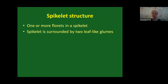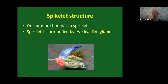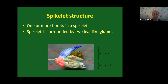To recap on spikelet structure: a spikelet contains one or more florets surrounded by two leaf-like glumes. In this diagram you can see two florets, each with a lemma, palea, and the floral parts — the stamens and, within, the anthers and pistil of the grass flower. Your upper and lower glume sit at the base of the spikelet. This structure is important to remember when working through an identification key.